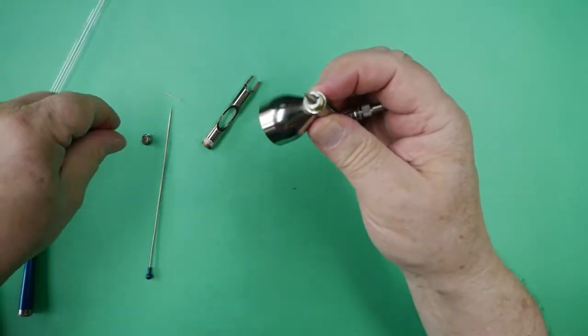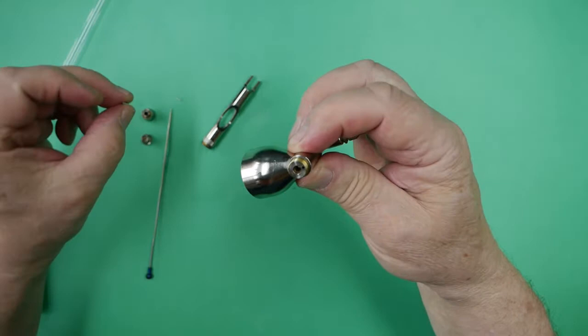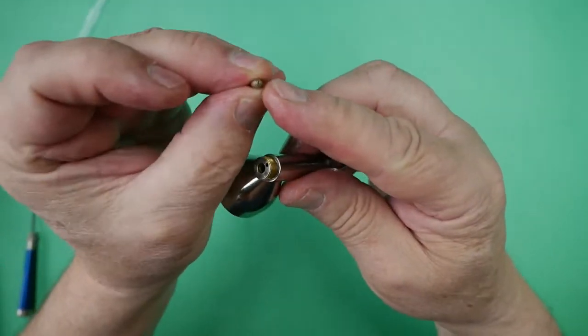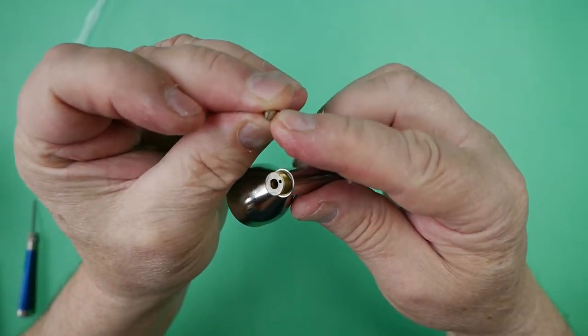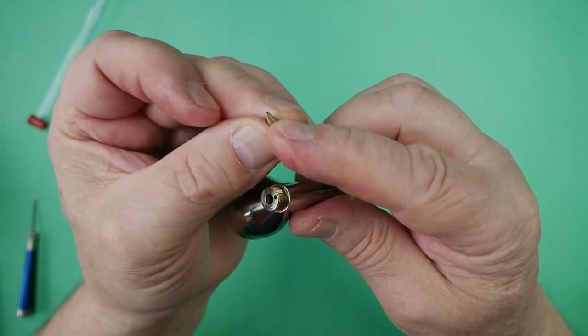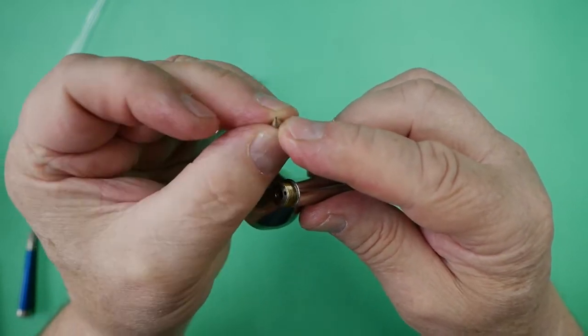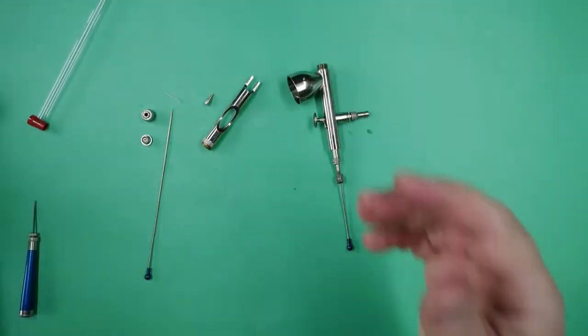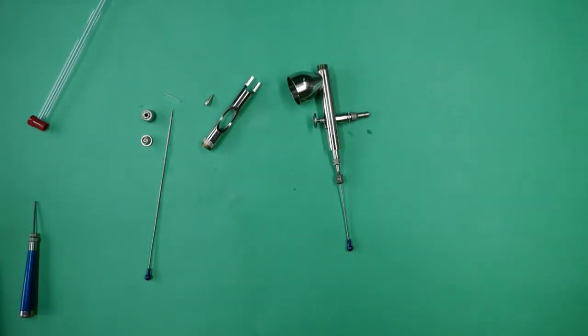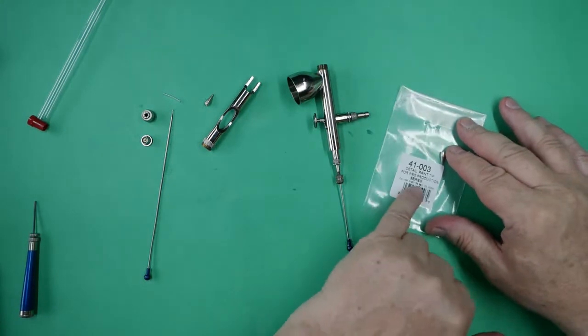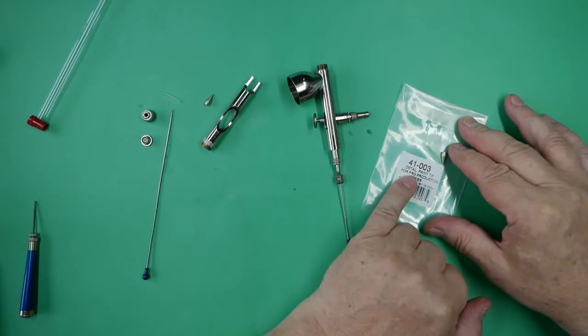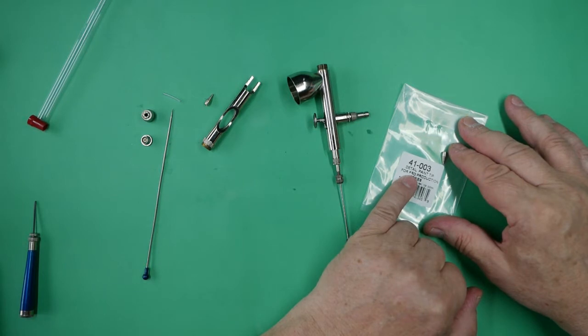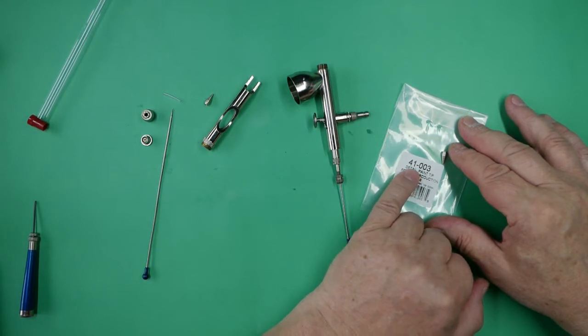So I will get a new tip. And as you may see there, it does look like the tip has been damaged and is splayed open, but we'll get a new one and double check. This is the new tip, and the tip is for the detail, which is the 0.5 for this Patriot, and the part number is 41-003.